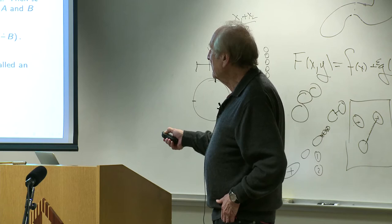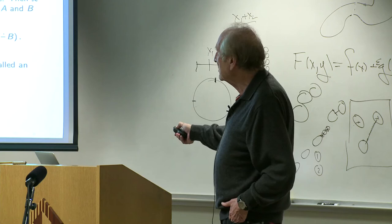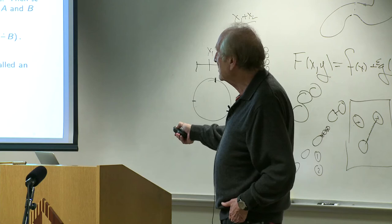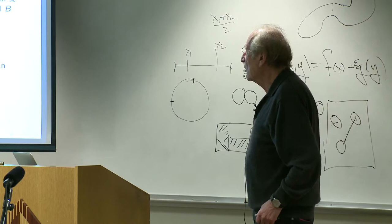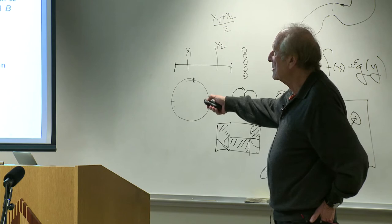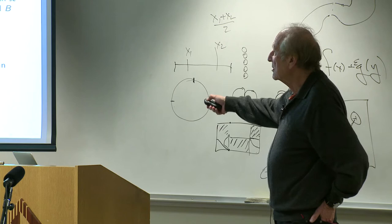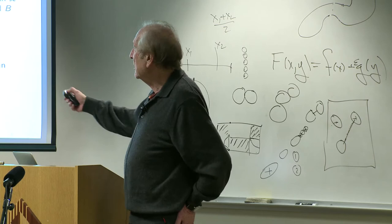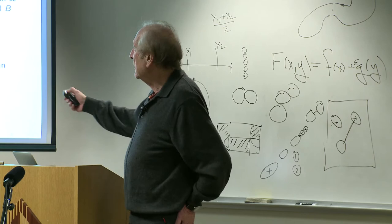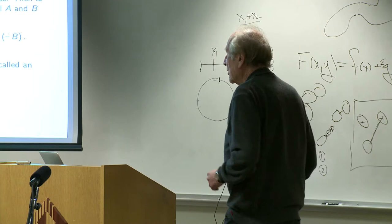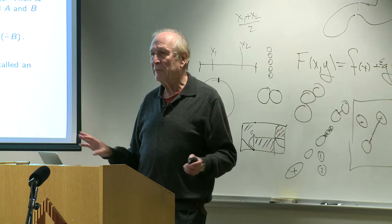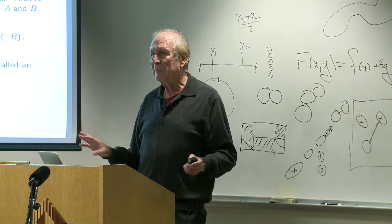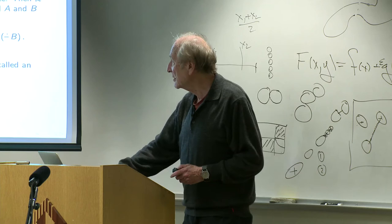If we have a complemented lattice without assuming distributivity, it is said to satisfy De Morgan's laws if it satisfies those basic laws of logic. A complemented lattice satisfying De Morgan's laws is called an ortholattice. Von Neumann thought these were natural conditions for complementation to satisfy — minimum properties that complementation should have. I also looked at systems where we have weaker forms of complementation, all the way to no complementation, and probability theories on those. But that's a different type of theory from what I'm presenting today.